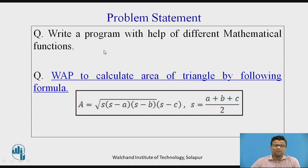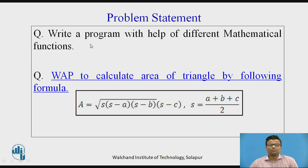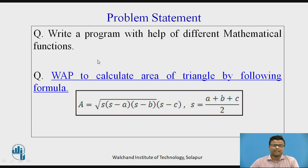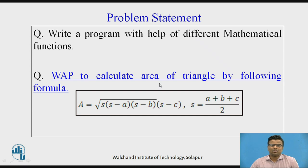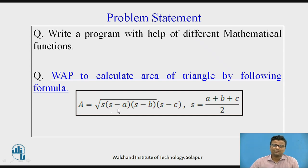In the last session, we discussed the program regarding how to use the different mathematical functions in a program. Now the second program: write the program to calculate the area of a triangle by the following formula — capital A is equal to the square root of S into (S minus A), (S minus B), (S minus C).